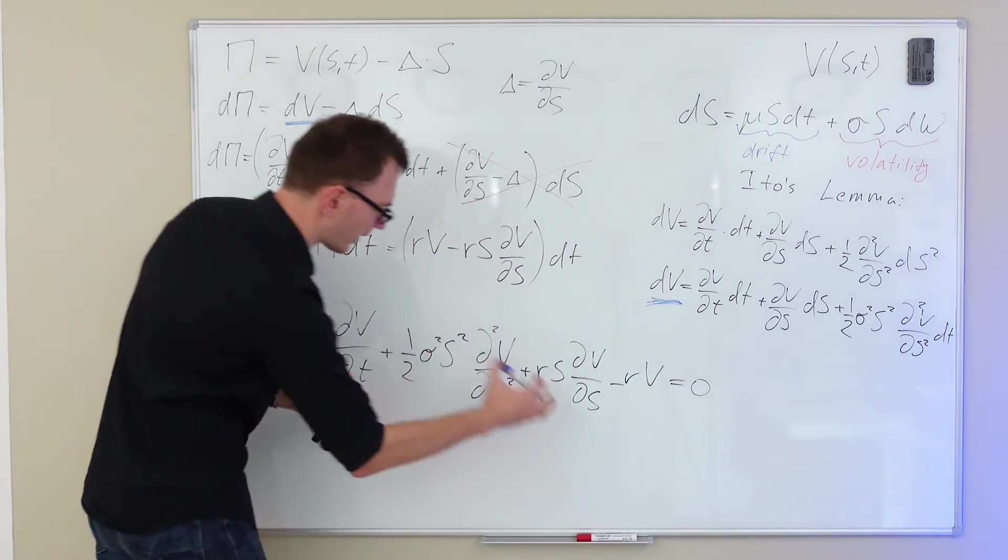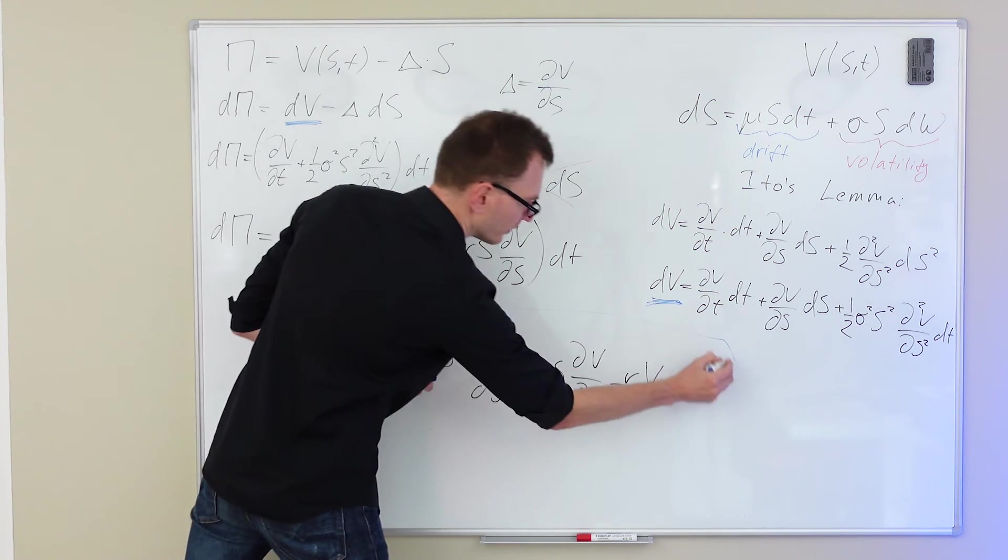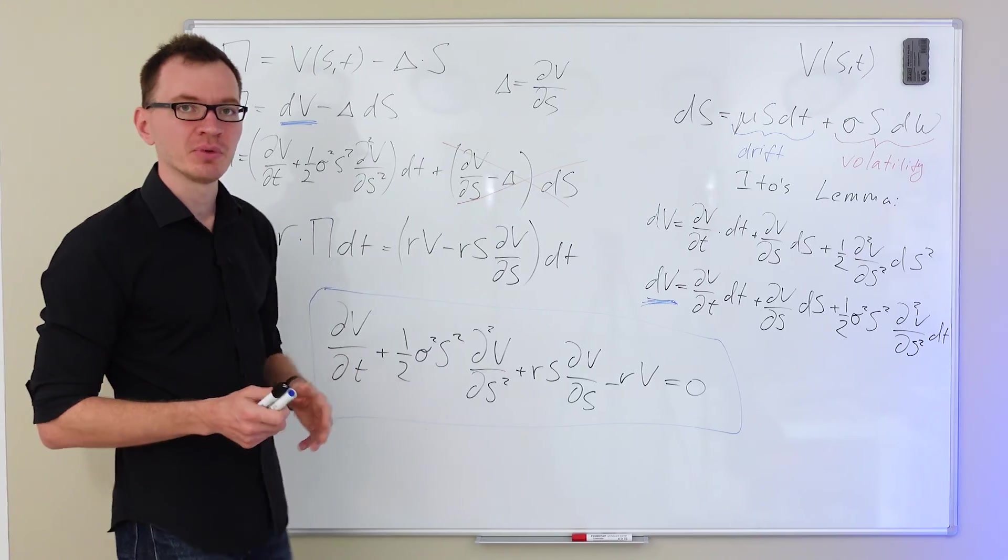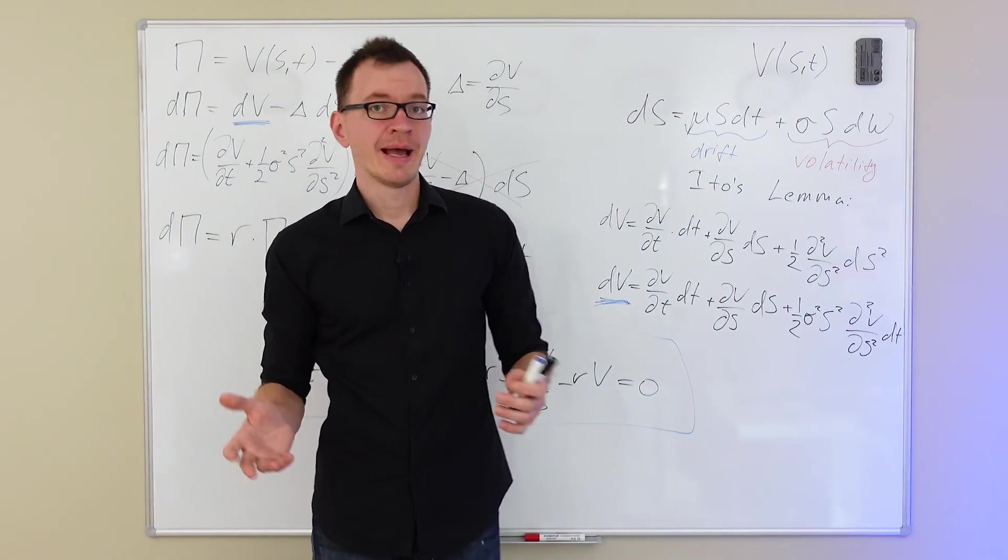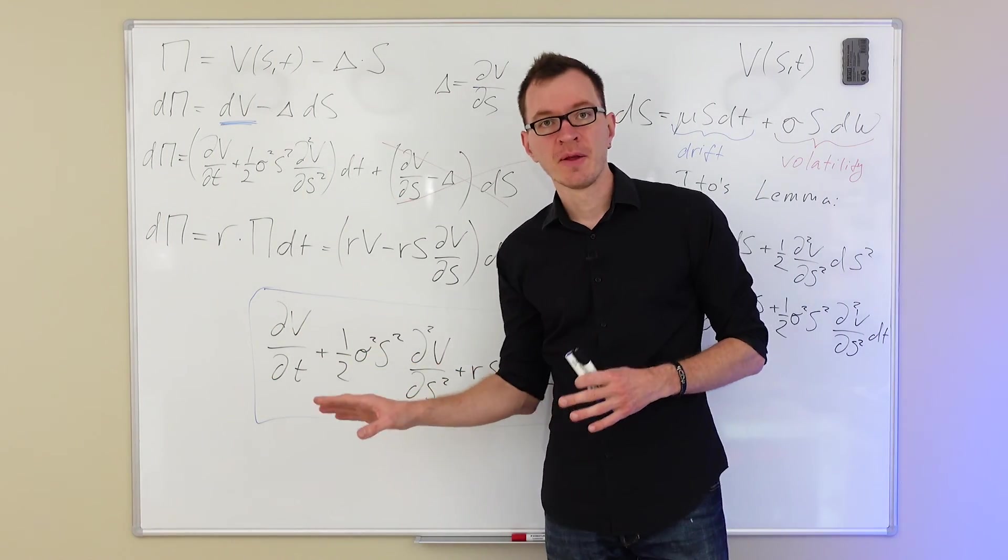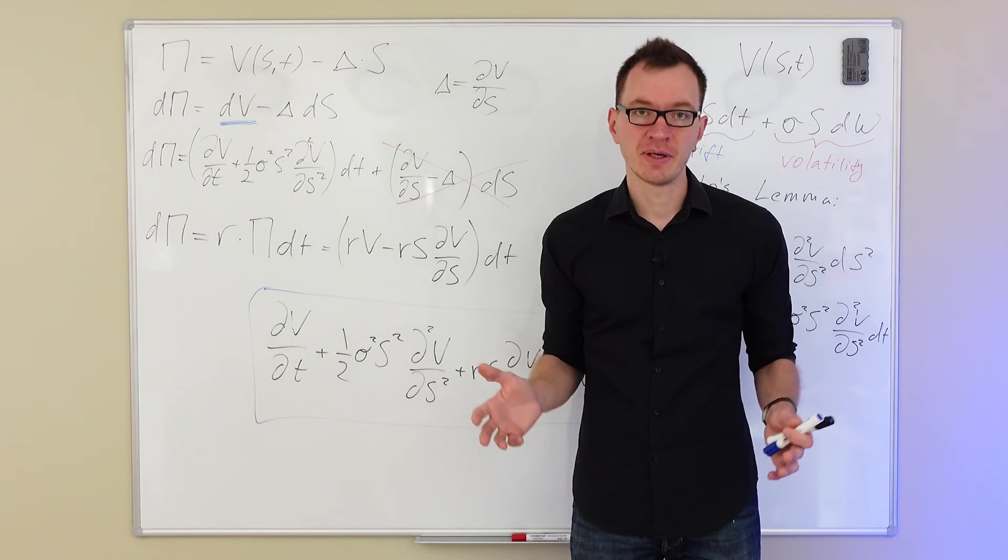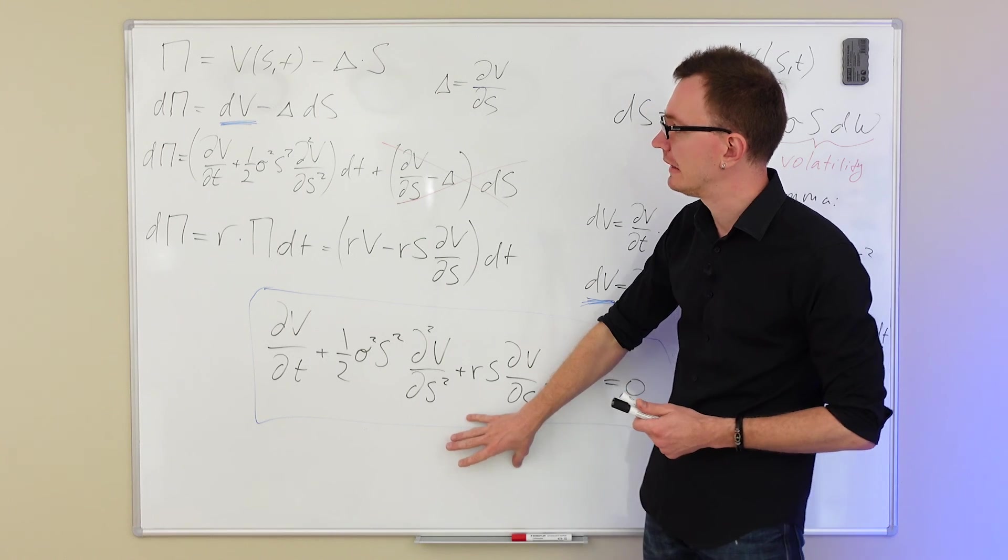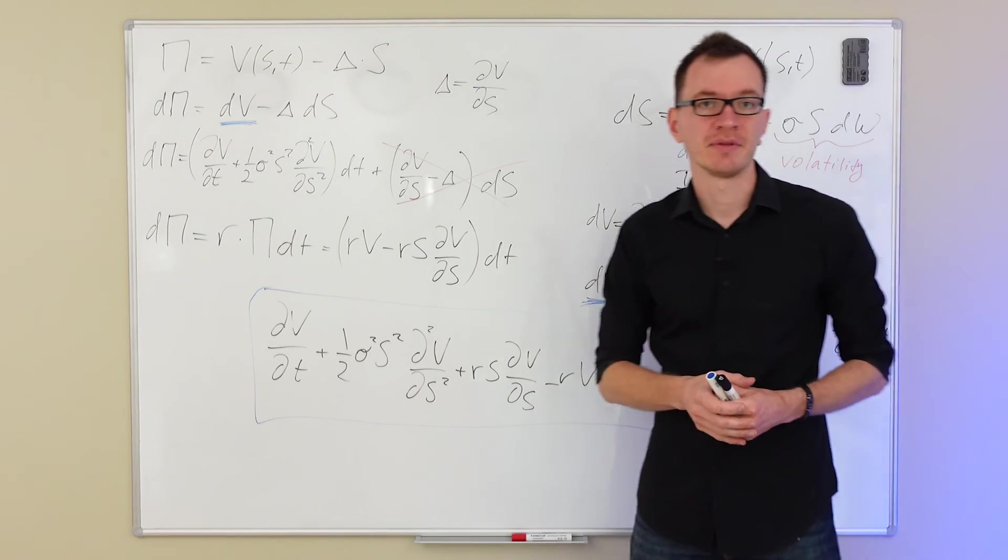And straight away you'll recognize this entire formula as the Black-Scholes equation. And what we can do now is, we can set V to be equal to either a call option or a put option, and solve the Black-Scholes equation for an exact formula of an option's price. Now, as you can see, there's been just a few steps that we've used to arrive at the Black-Scholes PDE. And that's pretty much all you have to do.